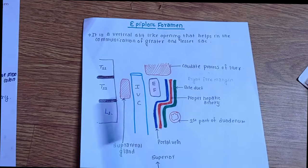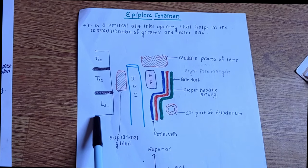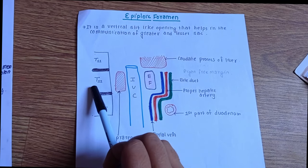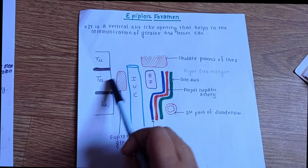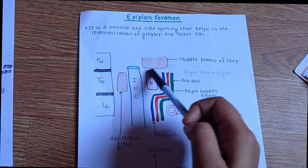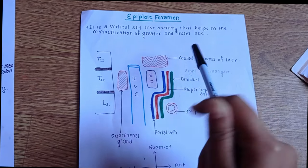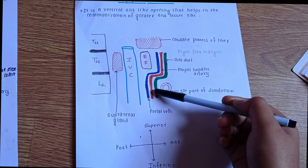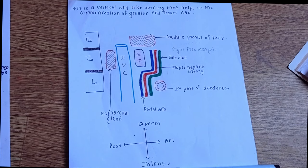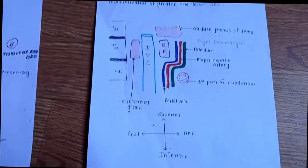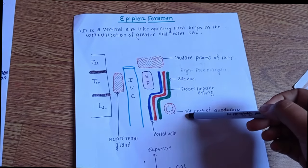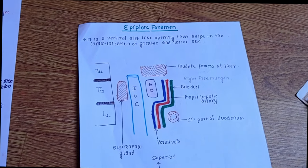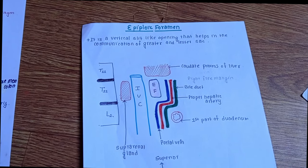In the posterior side, we have inferior vena cava, suprarenal gland, and the first lumbar vertebra. In the upper part, superior region, we have caudate process of the liver. And in the inferior part, we have first part of duodenum and the horizontal part of the proper hepatic artery. Thank you.